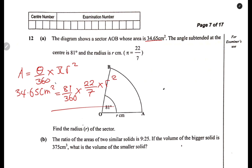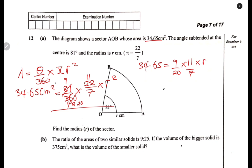We can start by simplifying this side first. The strategy we apply is to reduce. 9 into 81 is 9. What about 9 into 360? 9 into 36 is 4, so 9 into 360 is 40. Now we have 40 at the bottom. We can divide by 2, which gives us 20. Then 2 into 22 gives us 11. So what we are remaining with is: 34.65 equals 9 over 20, multiplied by 11 over 7, then multiplied by R squared.